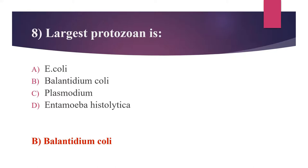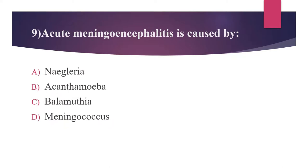The ninth question: Acute meningoencephalitis is caused by which of the following? Option A: Naegleria. Option B: Acanthamoeba. Option C: Balamuthia. Option D: Meningococcus. This was an MSC MLT exam question this year. The answer is Option A, Naegleria. Naegleria fowleri is the causative agent of acute meningoencephalitis, also called the brain-eating amoeba. Acanthamoeba and Balamuthia cause granulomatous amoebic encephalitis; Balamuthia is rare but severe. Meningococcus (Neisseria meningitidis) causes bacterial meningitis. This is a commonly confusing question.